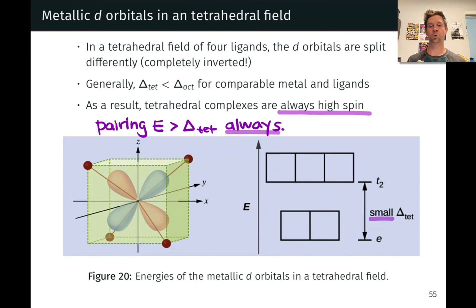The energy associated with pairing electrons is always greater than Δtet, the crystal field splitting in the tetrahedral geometry. In other words, this energy splitting is always relatively small, so we're always going to avoid pairing.